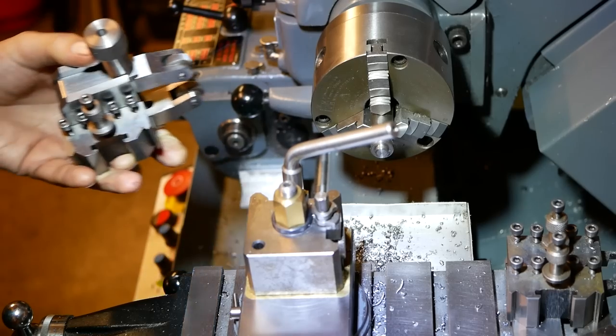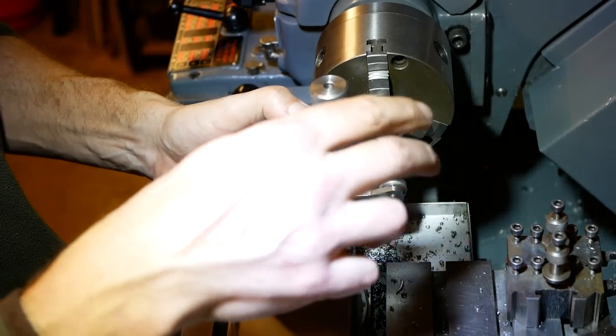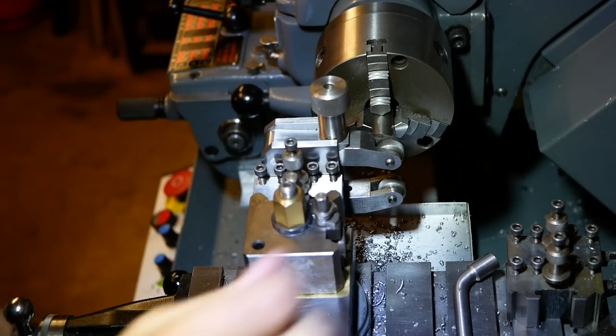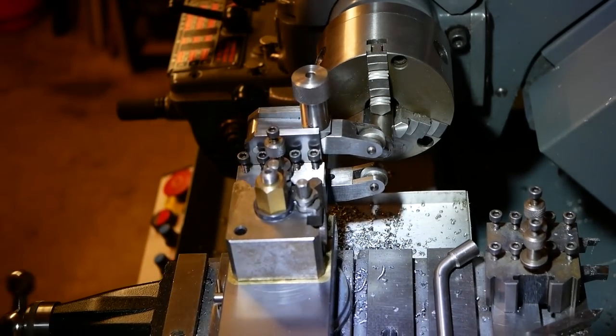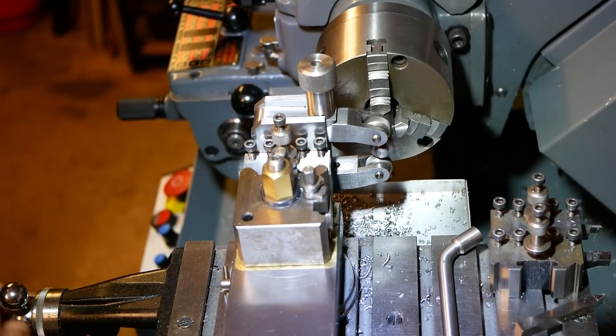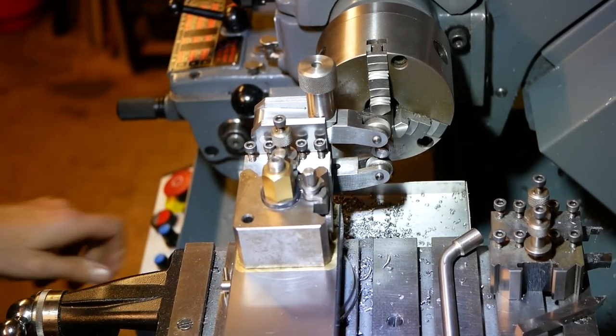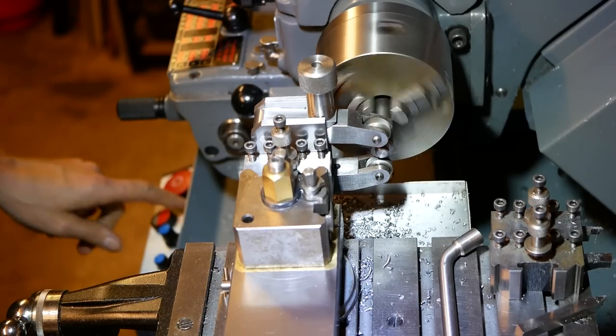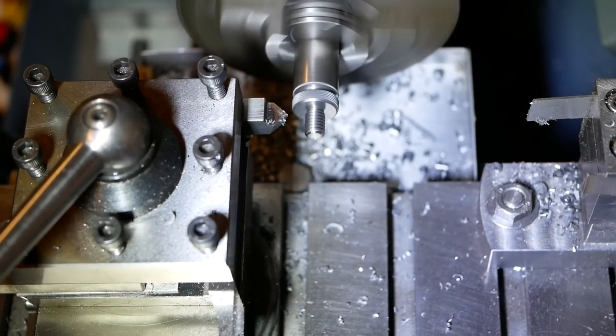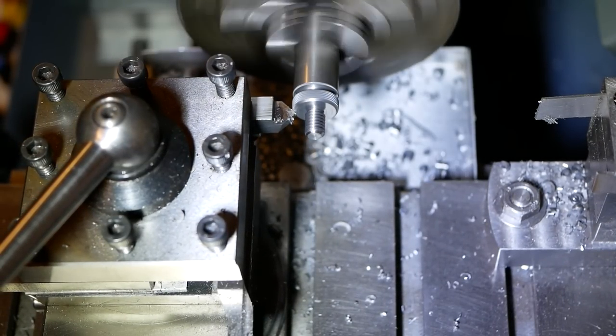If you have enough holders with your quick change tool post, you might have your knurling tool already mounted in a holder and then the changeover will be quicker with the quick change. Most of the time though, we won't have enough tool holders, in which case we'd still have to bolt the knurling tool into a holder. The final operation before parting off is chamfering the head of the bolt.